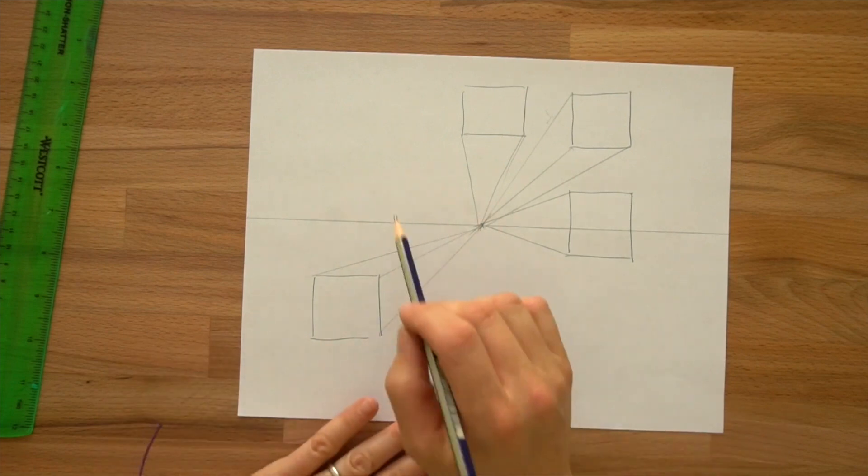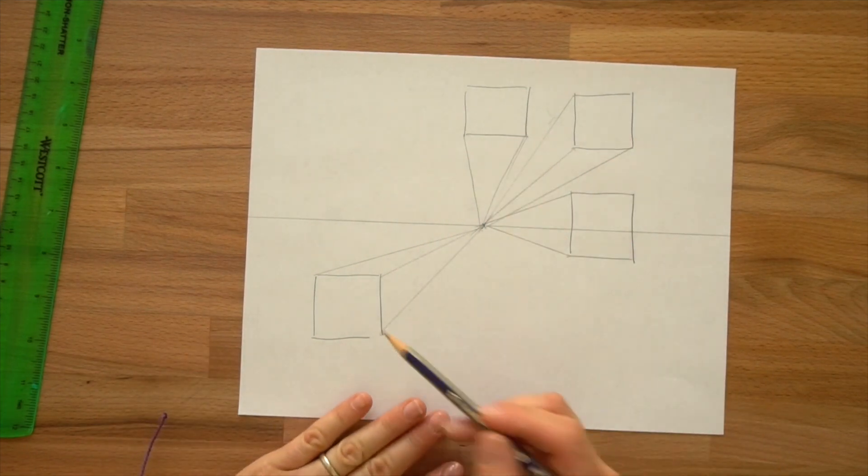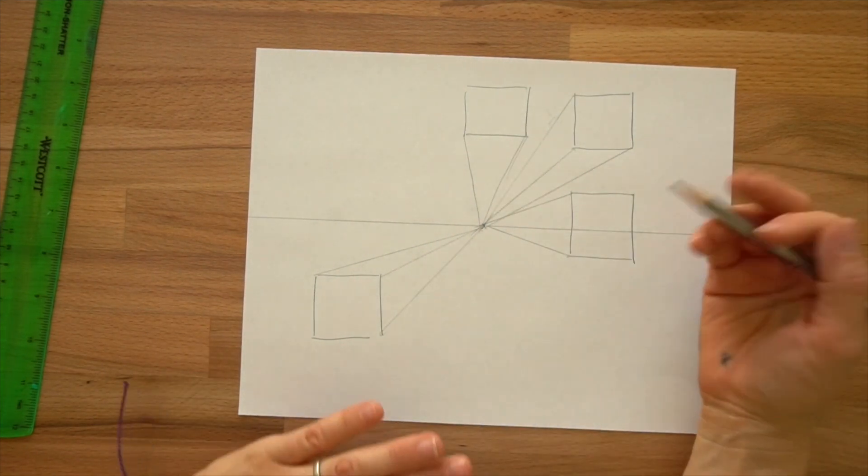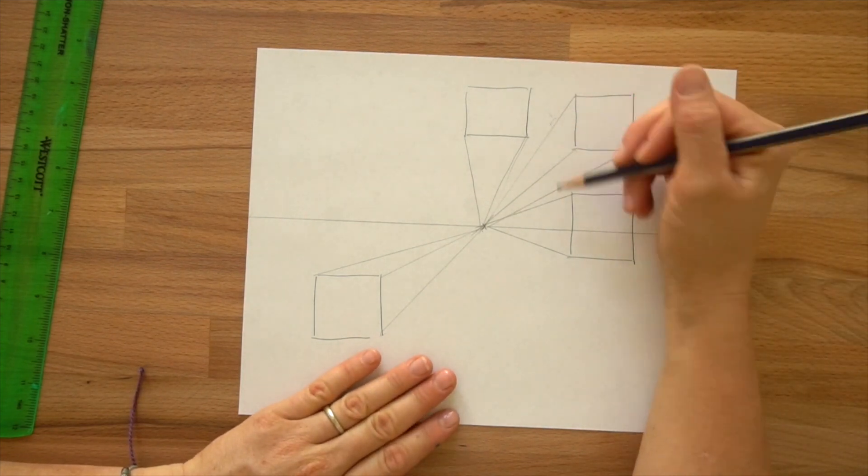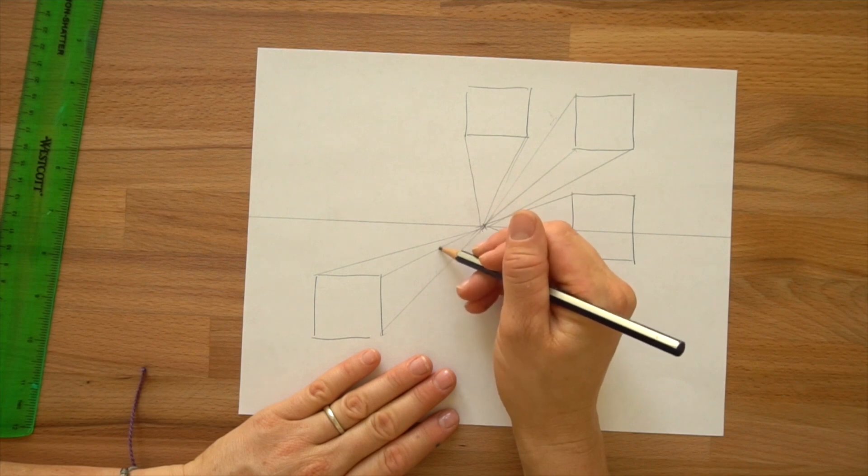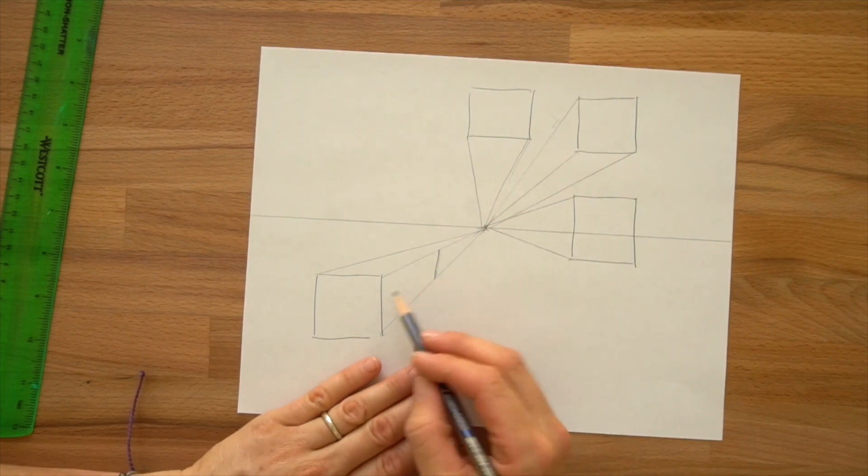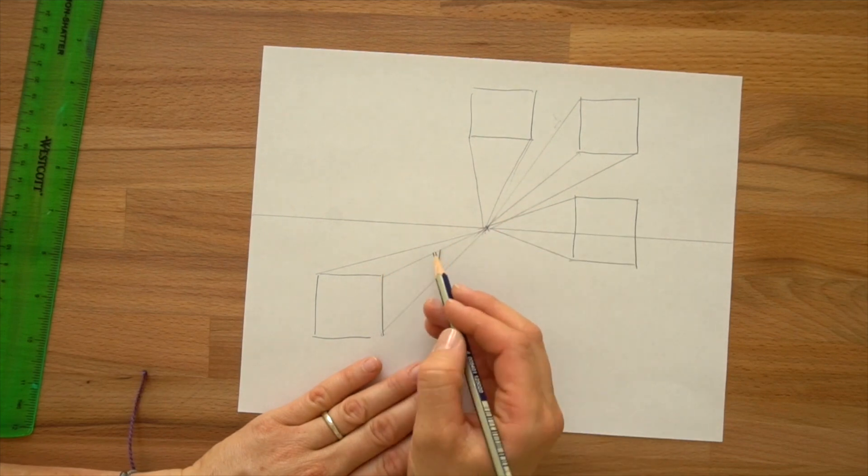Now we have these boxes. We have one on the horizon line, two above and one below. Now we just get to choose the size of these boxes. We're going to cut them off. You could choose if you want it to be really long, you could cut it off back here. You want to keep these two lines parallel and then these two lines parallel.